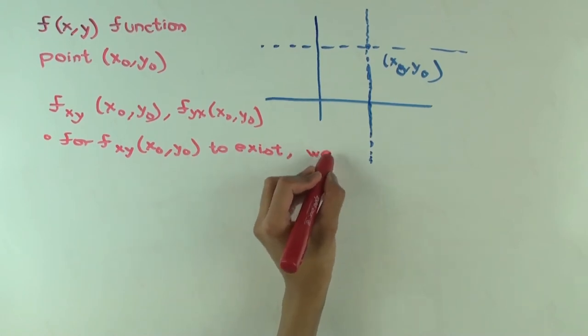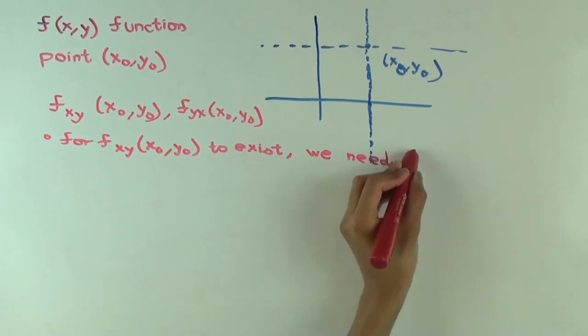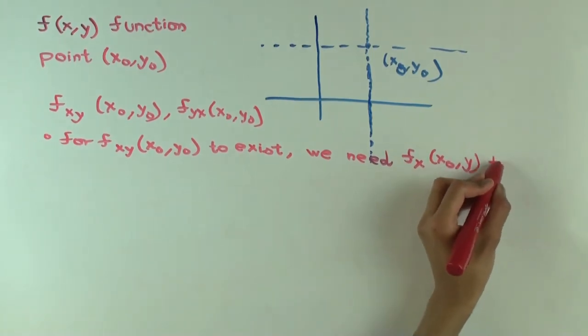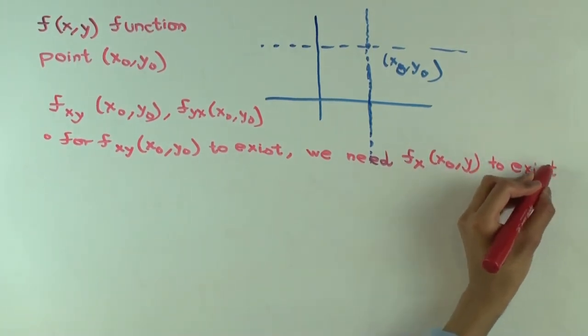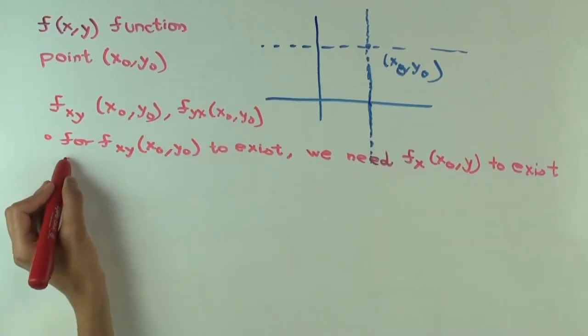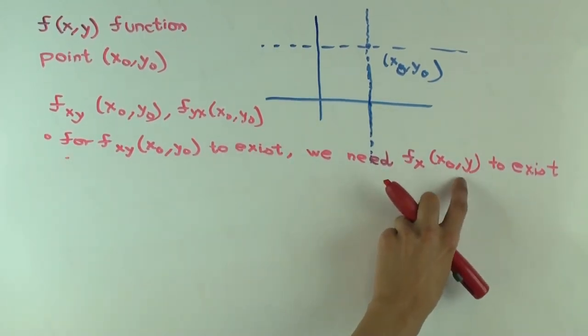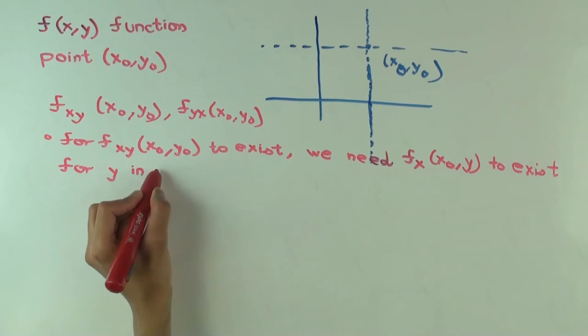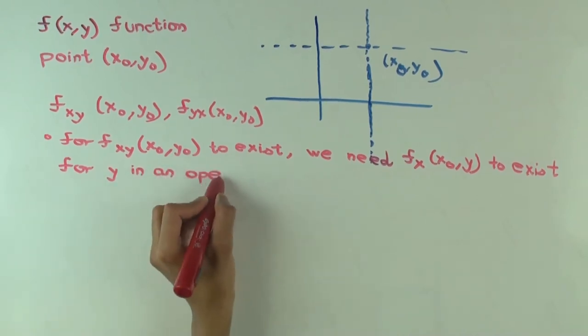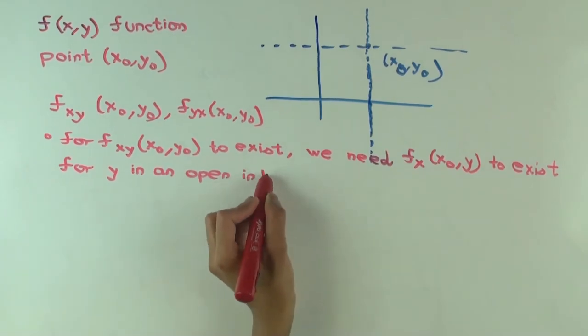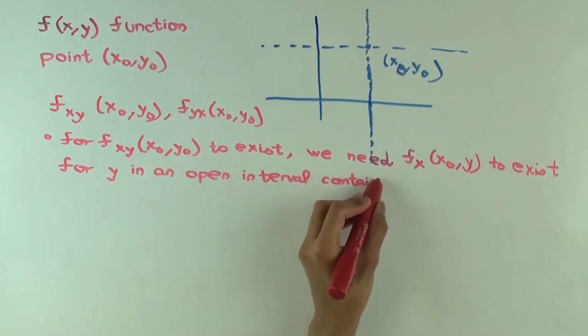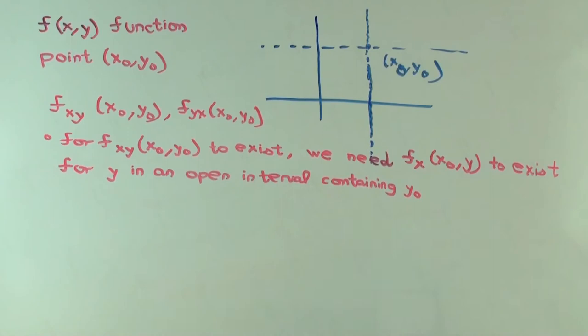We need f sub x to exist to exist for the same value of x₀. So the x₀ value remains x₀, but y value is close to y₀. Why do I say that? Can you explain what I just wrote? Just saying y has to be defined in the name of the variable. What has to be defined? Not f, f sub x.